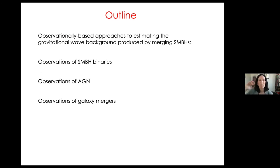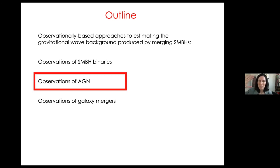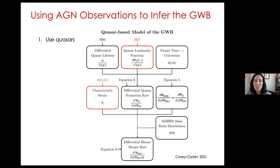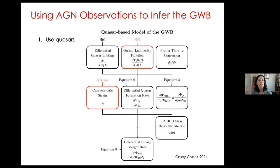We're now going to move away from direct tracers of supermassive black hole binaries to less direct tracers. As you get further removed from the binaries themselves, there are more assumptions needed to turn observations into estimates of the black hole merger rate. I'll talk next about observations of AGN — at least you know you have a supermassive black hole, but you don't know if it's a binary. A new paper from Andrew Casey-Clyde gives a flowchart of how a quasar-based model works for predicting a gravitational wave background, using the entire population of quasars to indirectly constrain the supermassive black hole binary population.